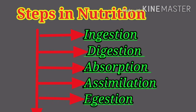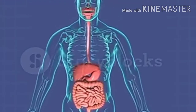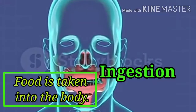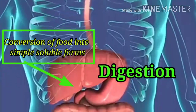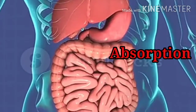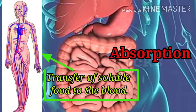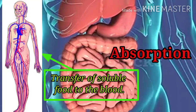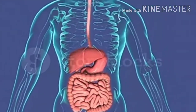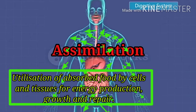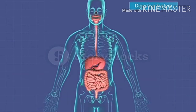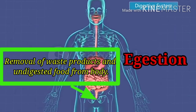Steps in nutrition: First step is ingestion — food is taken into the body. Second step is digestion — conversion of food into simple soluble forms. Third step is absorption — transfer of soluble food to the blood. Fourth step is assimilation — utilization of absorbed food by cells and tissues for energy production, growth, and repair. Fifth step is egestion — removal of waste products and undigested food from the body.